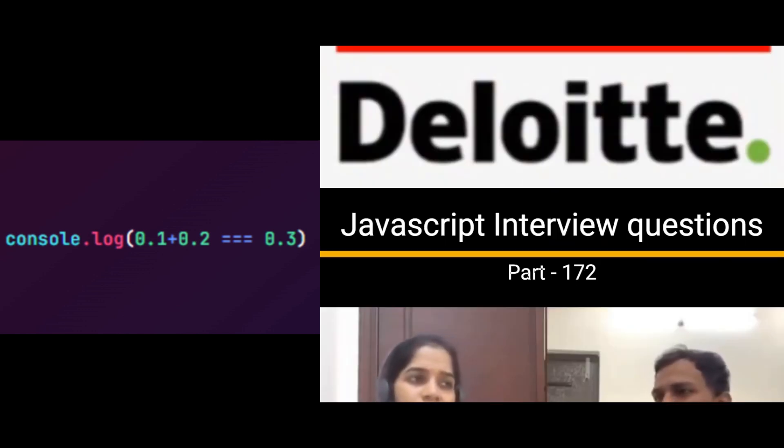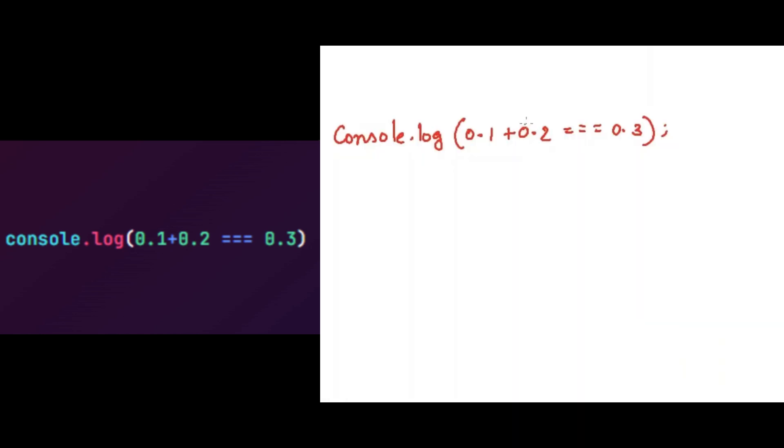Here's the second round interview question. Can you explain what the output will be? Most developers will think that the output for this question will be true, but no, the output will be false. This is because here we are using the strictly equal to operator between floating point values.